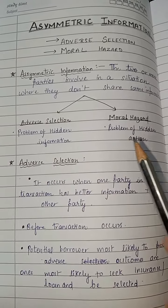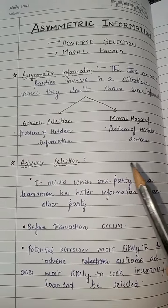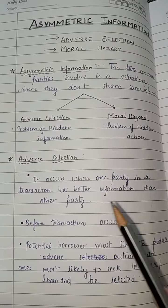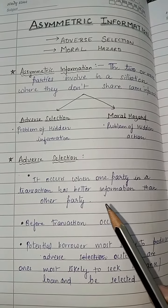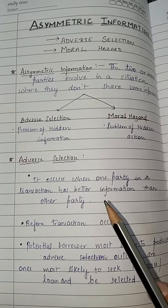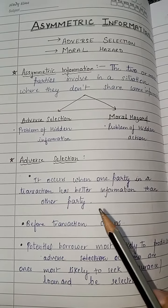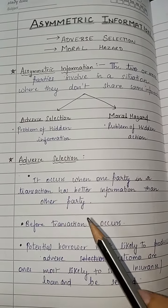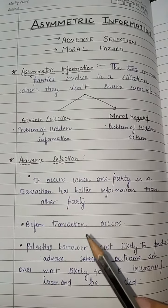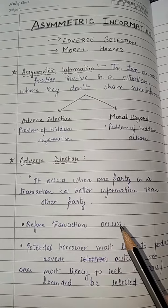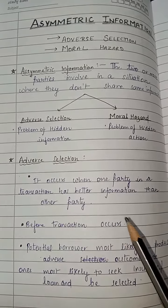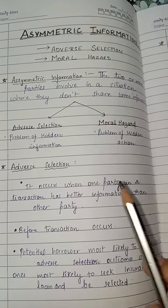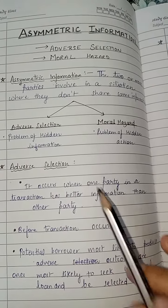Now talking about this in detail. Adverse selection occurs when one party in a transaction has better information than the other party. It always occurs before the transaction takes place.